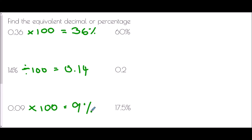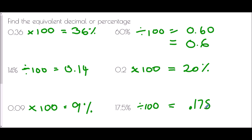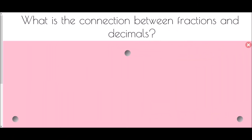For 60 percent as a decimal: divide by 100 to get 0.60, which is the same as 0.6. For 0.2 as a percentage: multiply by 100 to get 20 percent. Finally, 17.5 percent as a decimal: divide by 100 — all digits move two places to the right — giving 0.175.